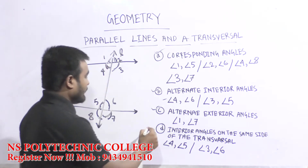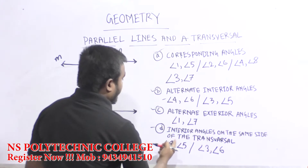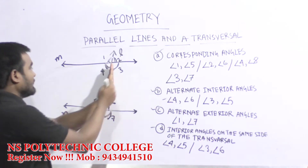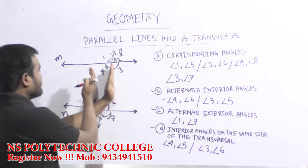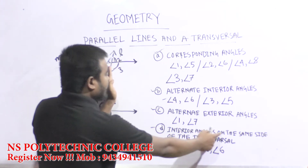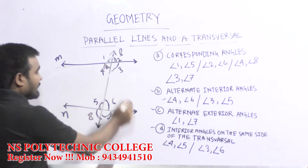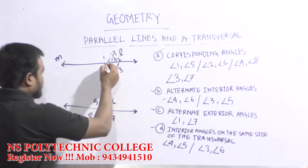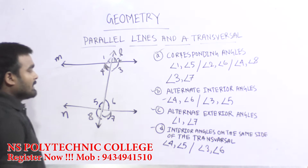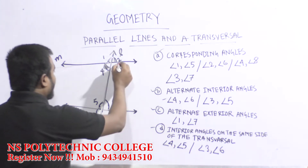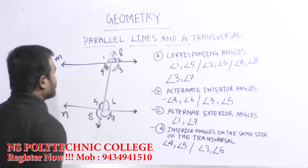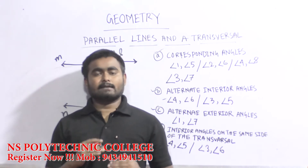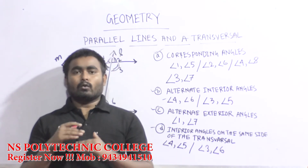Angle on the same side of the transversal. Three and six — the angle and its name you need to remember well. So next, let's look at the rules.